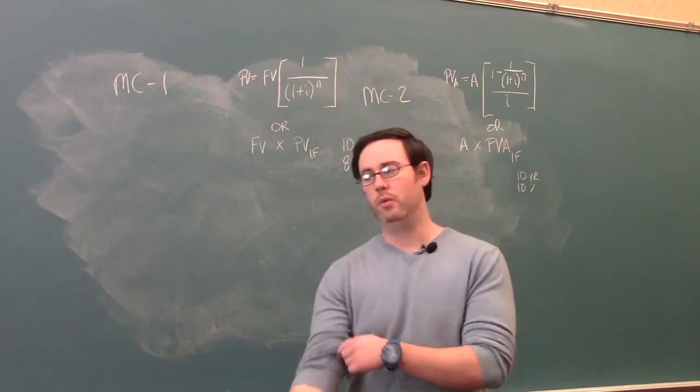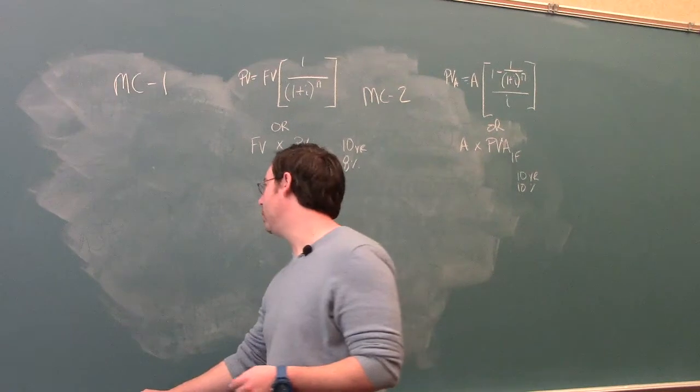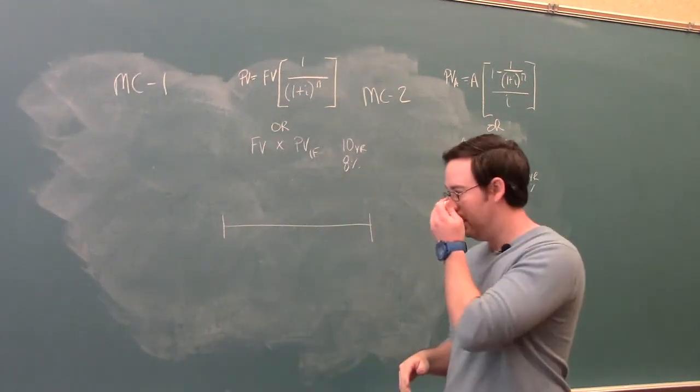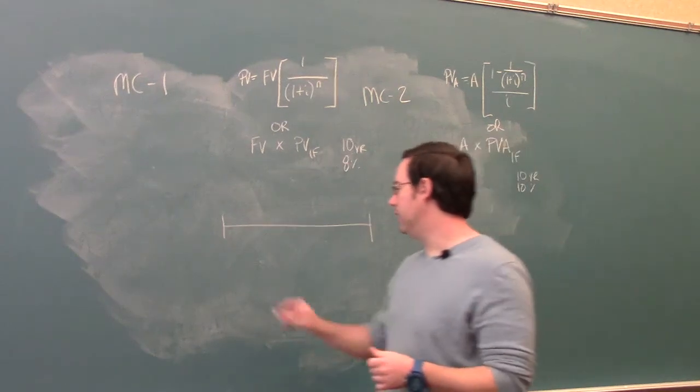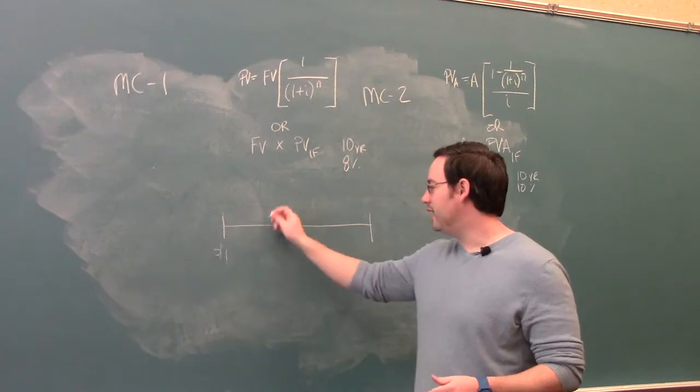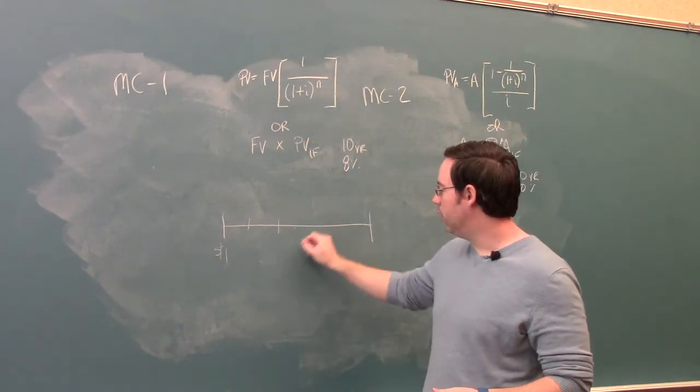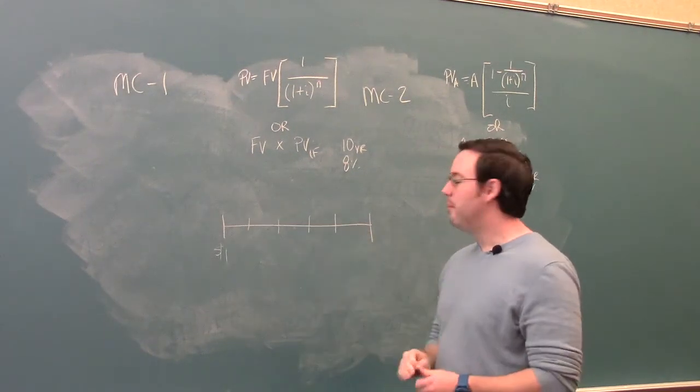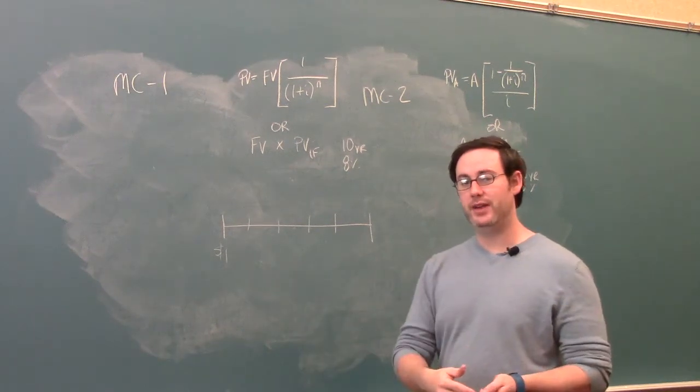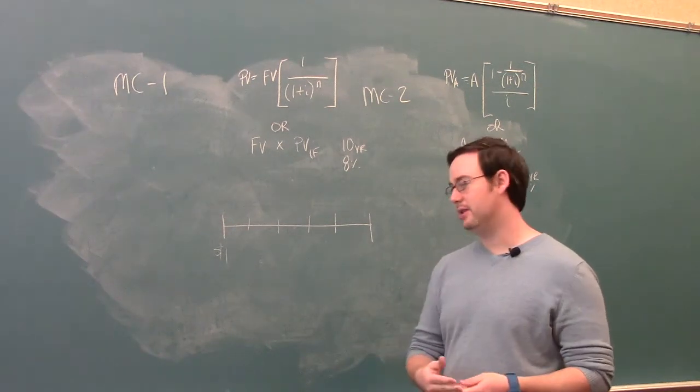How does that happen? Well, if we were to draw a timeline and have a beginning and ending period, and we were to say that if you got a dollar today, you could take this dollar and invest it in every single period you earn interest on it. But what's more is that if that interest was then put back into the original investment, it would compound upon itself.